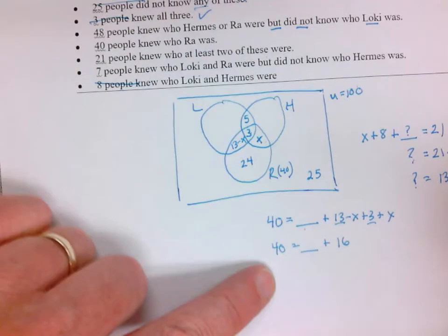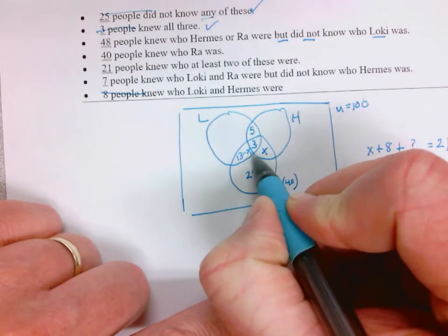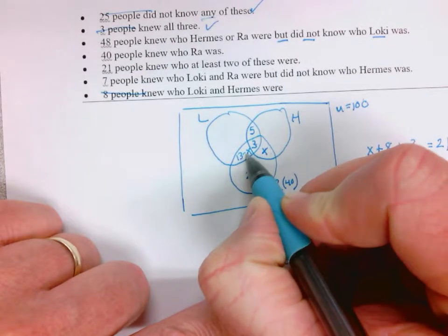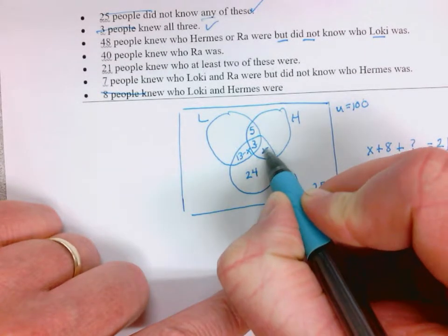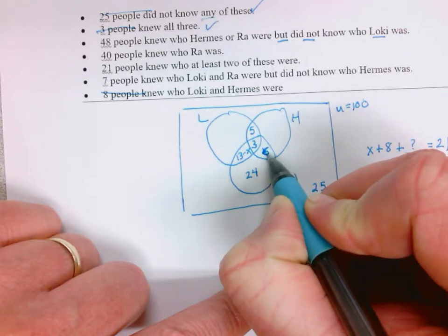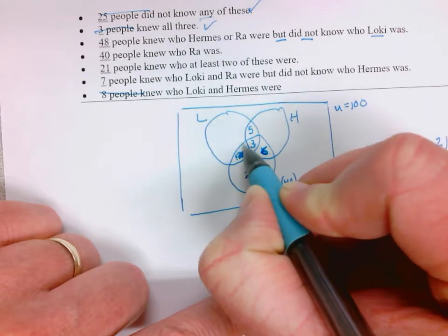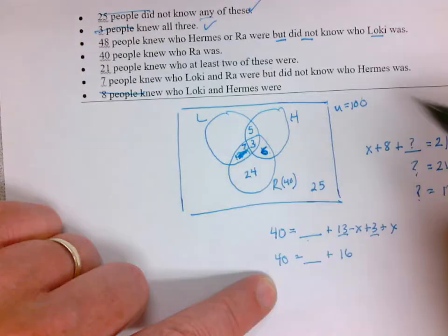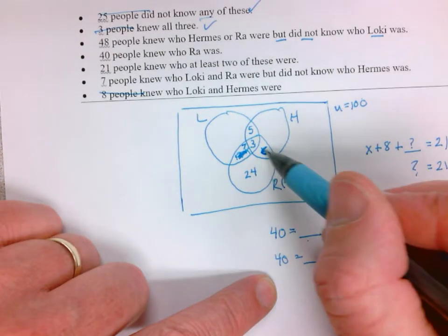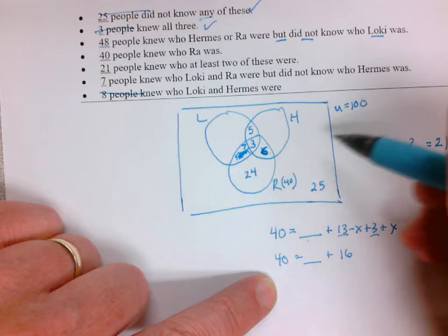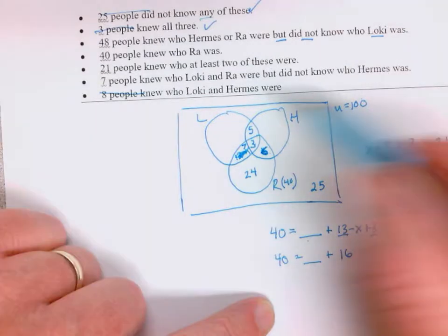13 minus 6 is 7. So X is 6, so right over here it's 6. And this is 7. Now we're getting a lot of information: 7, 3, 6, 16, 24, 40.